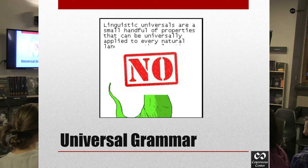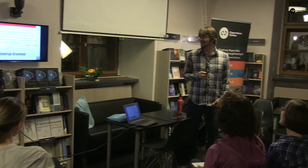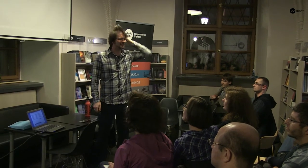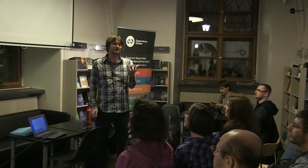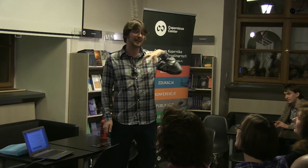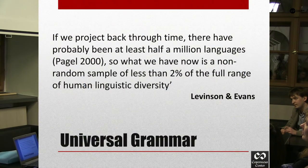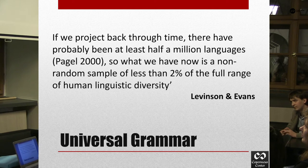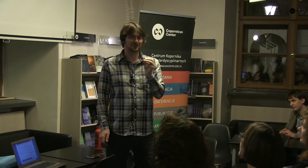Not many people believe in universal grammar anymore, and it's really unhelpful. We can't really be sure that there is anything like universal grammar, because we don't have access to most of the languages spoken in the world today, let alone those that have ever been spoken. A survey estimated that we probably have access to something like two percent of all human linguistic diversity that has ever existed. So how can we be sure on a sample of two percent that there is such a thing as universal grammar?